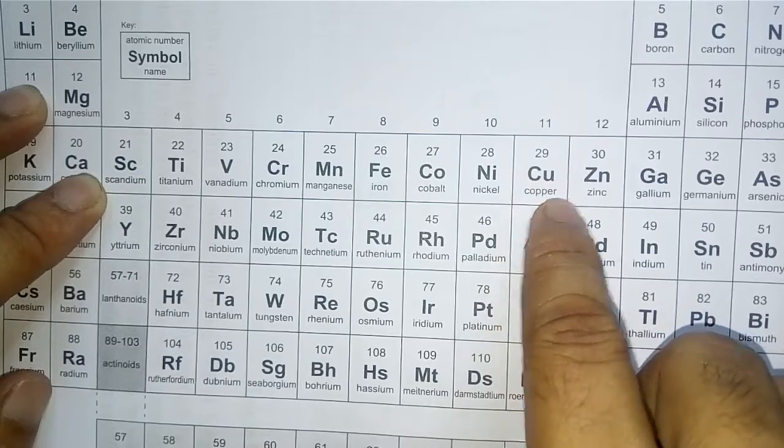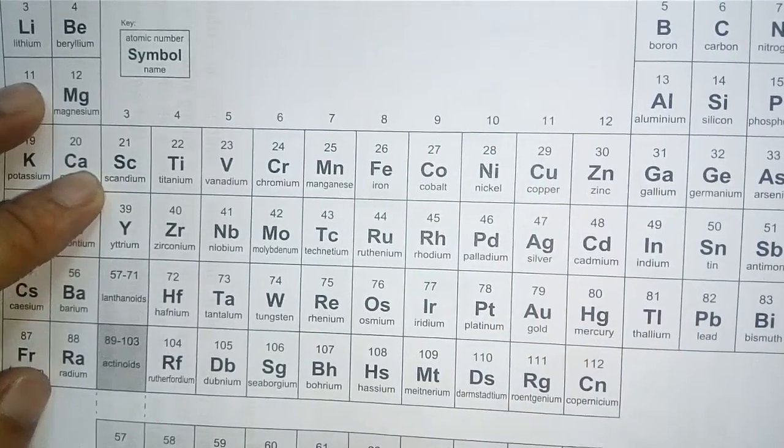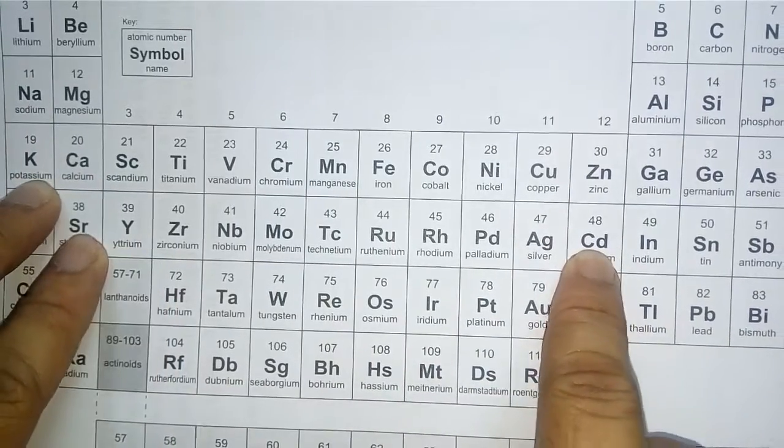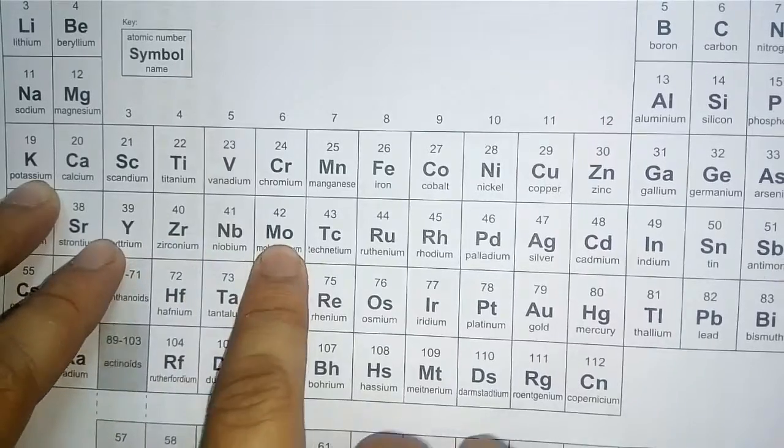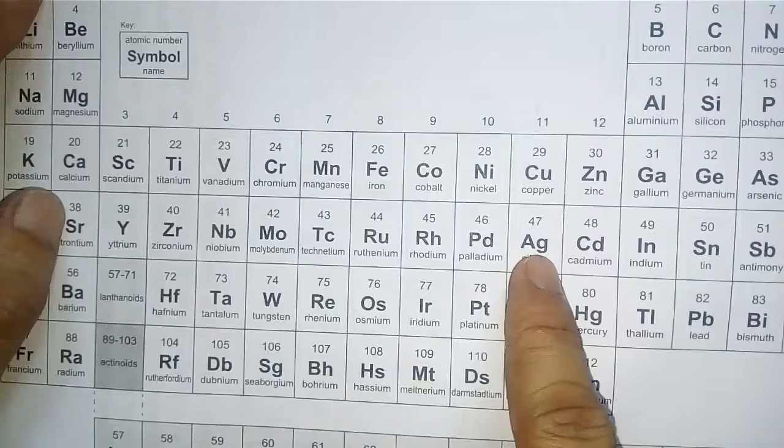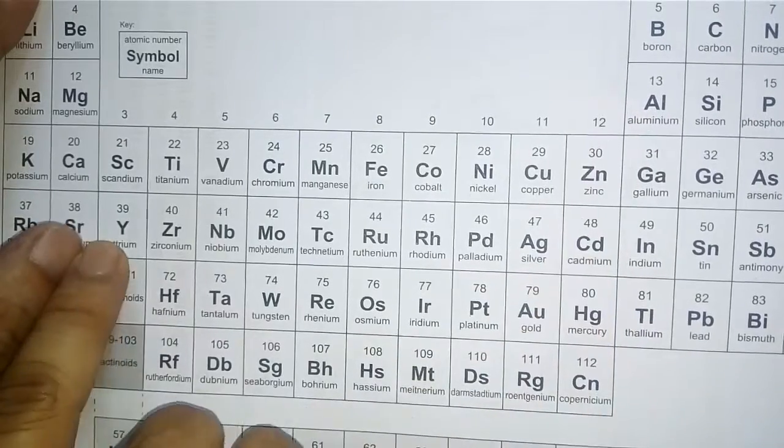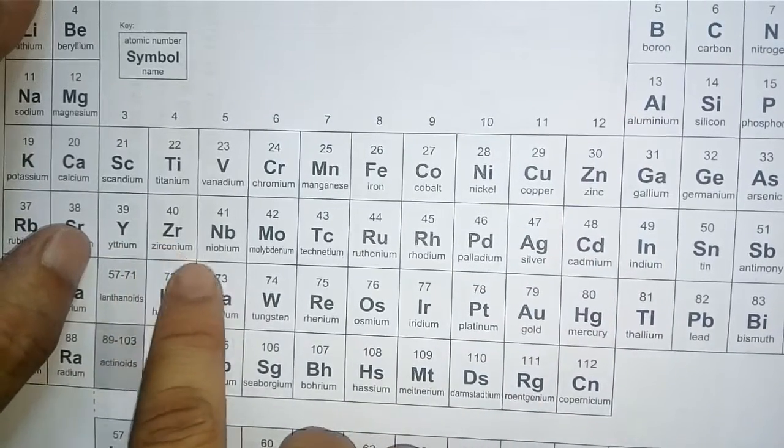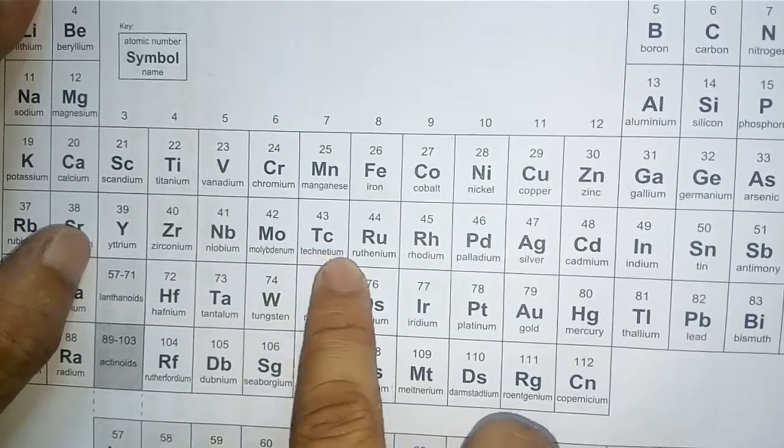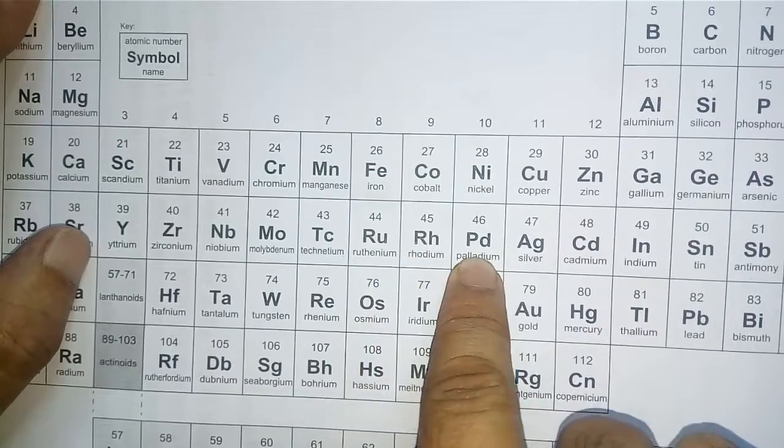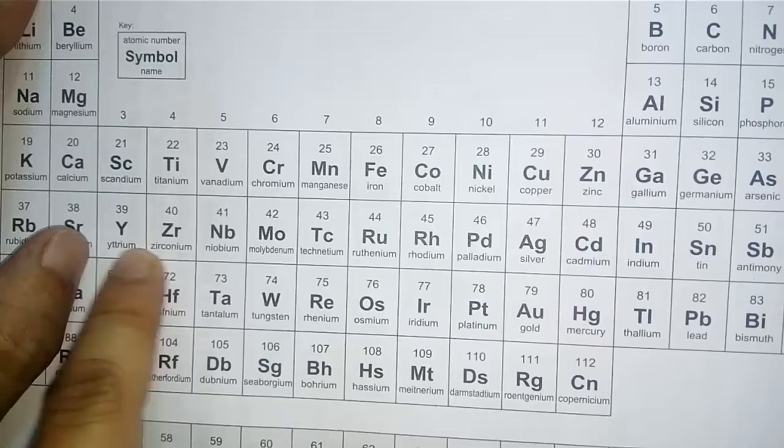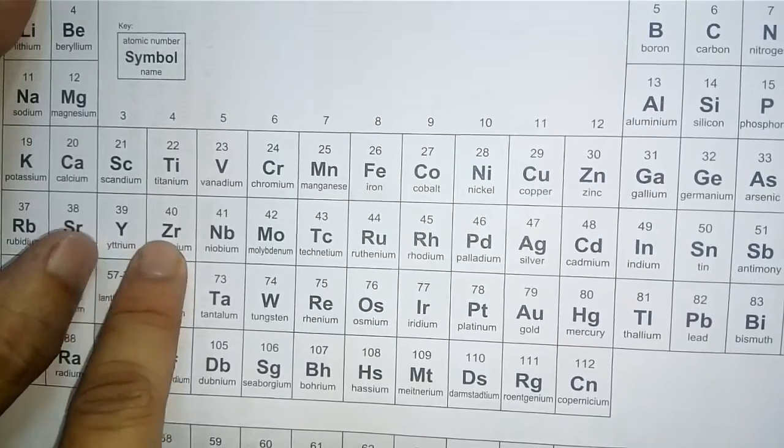And zinc. That means now yttrium to cadmium. Y Zindagi Nahi Mohabbat Teri Ro Roker Pukaregi Aaj Chandini. So this one is yttrium, zirconium, niobium, molybdenum, technetium, ruthenium, rhodium, palladium, silver, cadmium. So Yari Zara Nivana Moth Tak Ro Roker Pukaregi Roker Pukaregi Aaj Chandini.